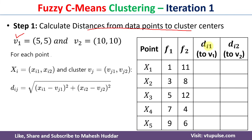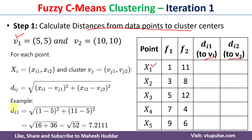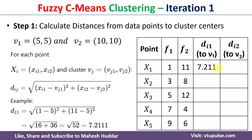We need to find the distance with respect to both centers v1 and v2 for all data points. For example, taking data point x1 and center v1, d11 = sqrt((x11 - v11)² + (x12 - v12)²) = sqrt((1 - 5)² + (11 - 5)²) = sqrt(16 + 36). Once simplified, d11 equals 7.2111.